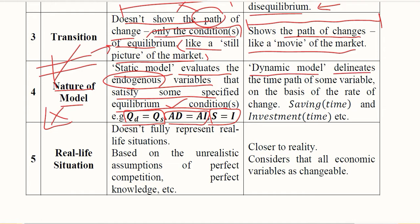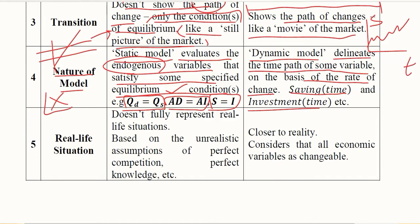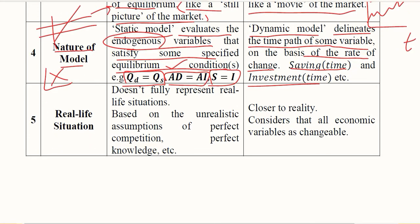Whereas dynamic analysis discusses dynamic models that delineate the time path of some variable on the basis of the rate of change. The rate of change is assessed over time — for example, how savings change over time, or investment as a function of time.